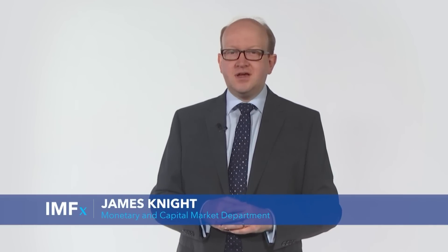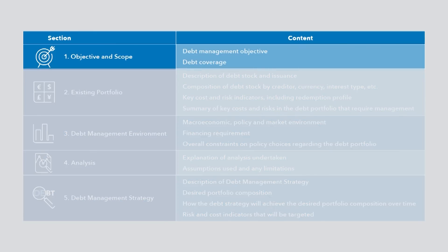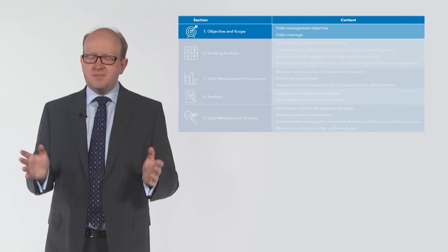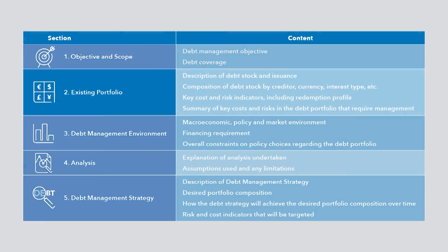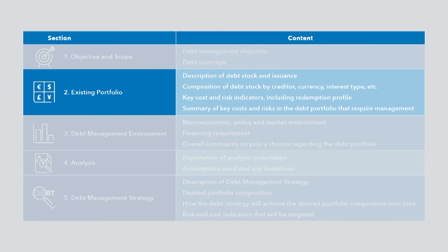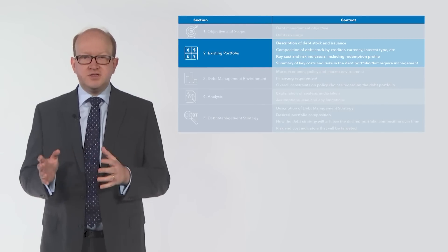Let us recap the information that should be covered in the five main sections of a DMS document. The objectives and scope section describes the objectives of debt management, defines the scope of debt the strategy covers, and identifies the costs and risks being managed. The sole purpose of the DMS is to achieve the debt management objectives. The existing portfolio section provides the context of the existing debt portfolio as the point of departure for the strategy. It describes the composition of the portfolio in terms of cost and risk characteristics, including the mix of currencies, the mix of fixed rate and variable rate debt, the maturity structure, and the mix of creditors and investors. The drivers of past trends and key changes over time should be explained.